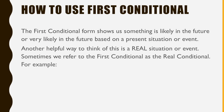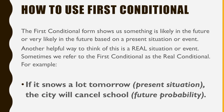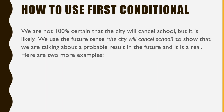Another helpful way to think of this is a real situation or event. Sometimes we refer to the first conditional as the real conditional. For example, if it snows a lot tomorrow — this is the present situation — the city will cancel school. This is the future probability. We are not 100% certain that the city will cancel school, but it is likely. We use the future tense to show that we are talking about a probable result in the future and it is real.